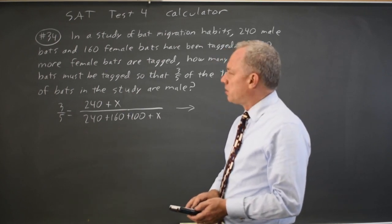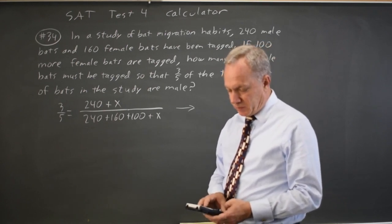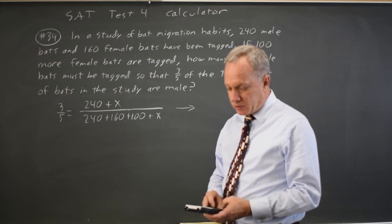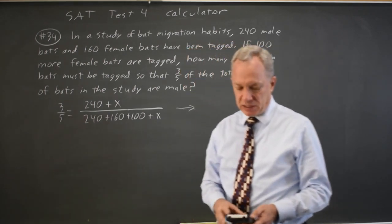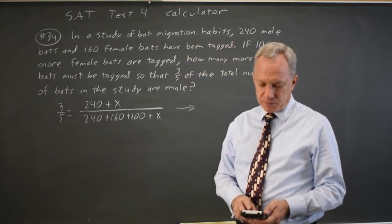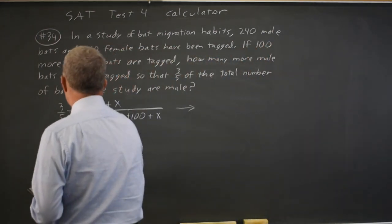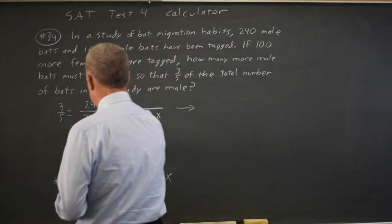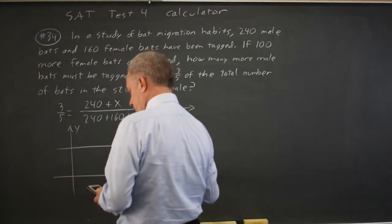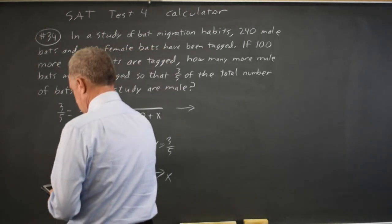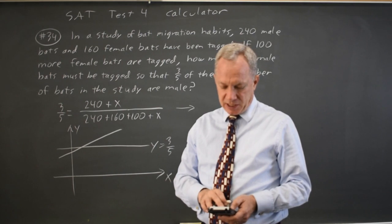Choose a window that includes all reasonable values and I'm going to go to 1000, which is far more than reasonable, and for y negative 1 to 1 because I only see three-fifths. And when I hit graph, the graph on my calculator looks like this. Here's y equals three-fifths, and here's the line for my right-hand side.